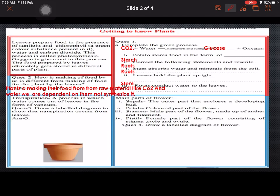How is making of food by us different from making of food by the plants? Plants make their food from the raw materials like carbon dioxide and water, and we are dependent on them, not synthesizing it.